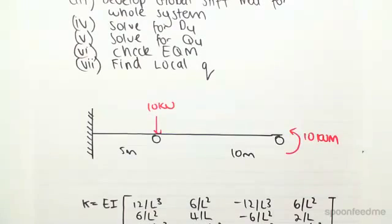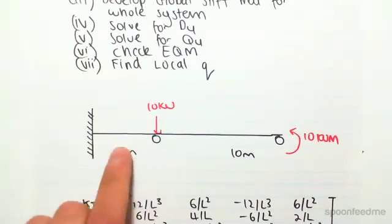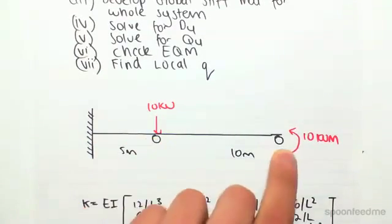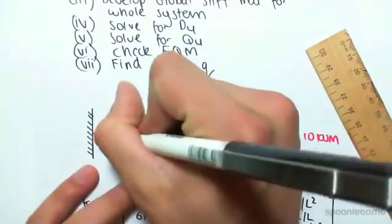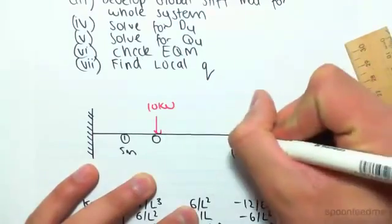So, what we need to do is, you can see we're going to look at two members. We're going to look at that beam there and that beam there. We always look at the members between supports. So, we're going to first of all just call this member 1 and we'll call this member 2.